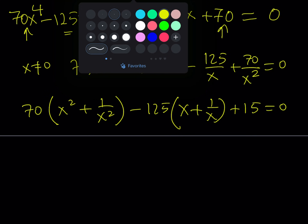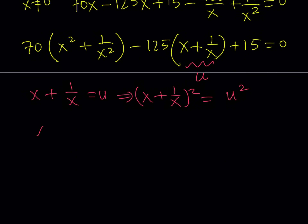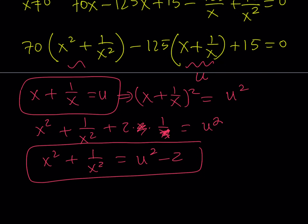Let me explain. I'm going to call u = x plus 1 over x. If I square both sides I get u squared, and expanding: x squared plus 1 over x squared plus 2 times x times 1 over x, which equals 2. Using the formula (a+b)² = a² + b² + 2ab, where a and b are reciprocals, they cancel out — leaving us with x² plus 1 over x² equals u² minus 2.